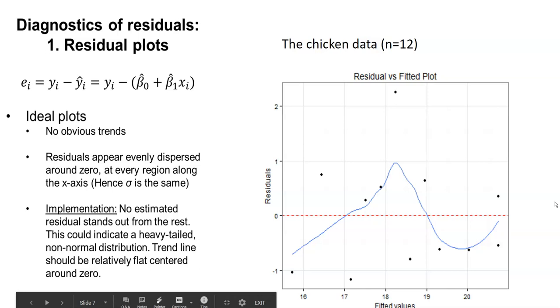The first way to do that is to look at a residual plot. What you're seeing here is the chicken and lysine data with 12 observations. The fitted values are along the x-axis, and the residual values are along the y-axis.